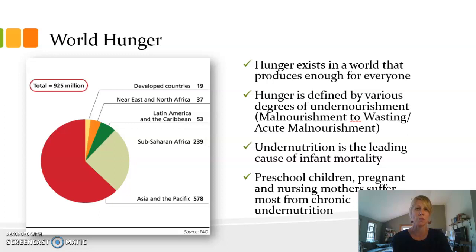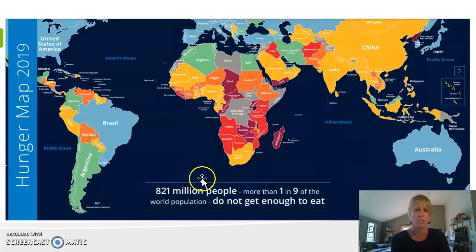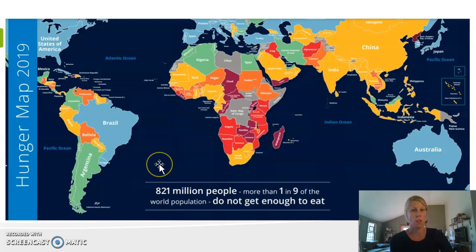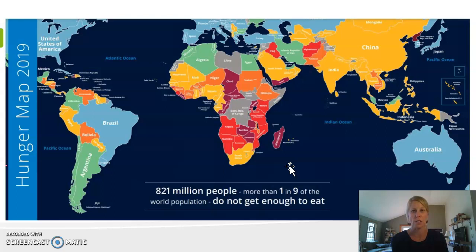Looking at a map, we see this figure of 821 million people — one in nine in the world population — don't have enough to eat. In Africa, places like Zimbabwe and Madagascar, and also places like North Korea, are suffering with the highest and most acute forms of hunger, with the largest number within their populations facing hunger and malnutrition. Many other places in the globe are suffering from undernourishment in ways that they don't need to, given that we could have a system that works more equitably for everyone. So why does this happen?